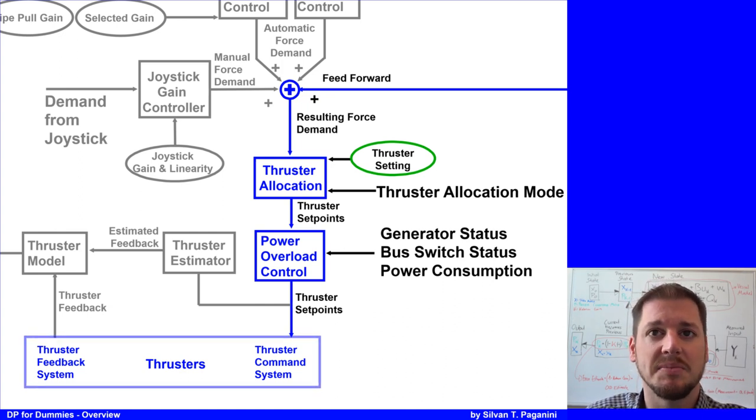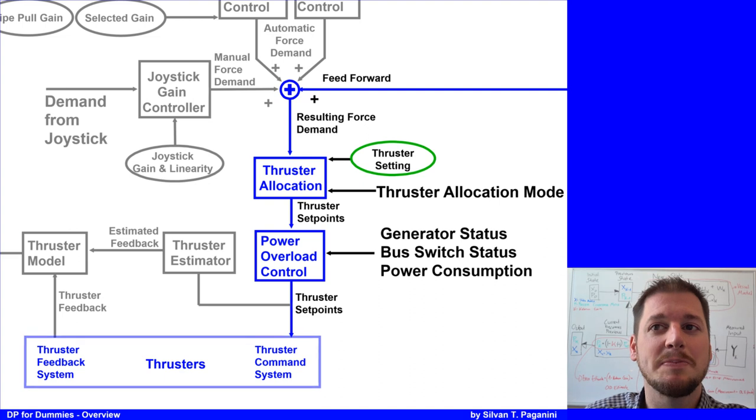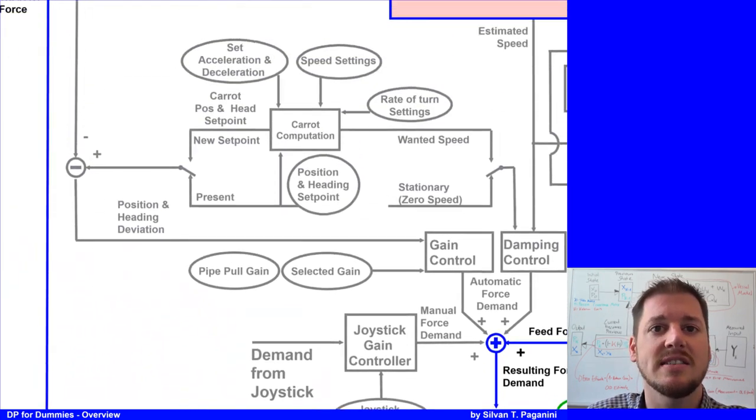The feedback from the thruster like RPM, load, pitch are then converted in the thruster model to force, so-called thruster force, normally tons in surge and sway and tons per meter for yaw and sent to the vessel model.